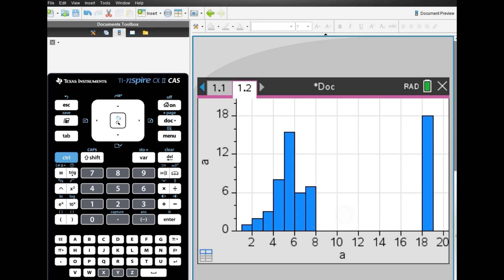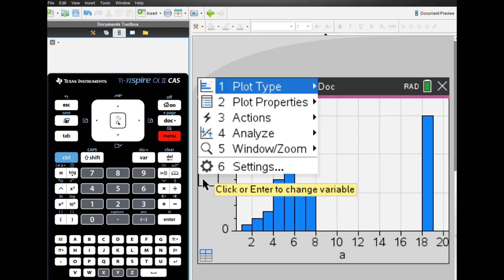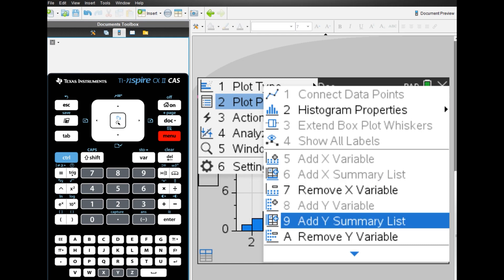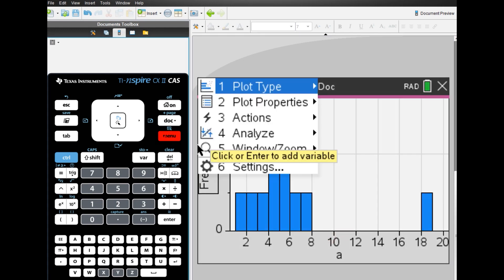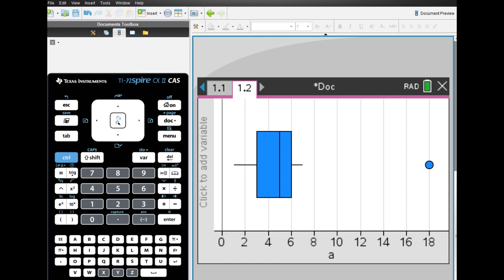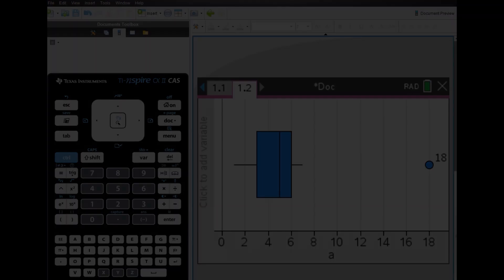Now a histogram will appear, but we need to change it to box plot. Press the menu button again and select 2 for plot properties, and then choose remove y variable. Finally, press the menu button again and select box plot under plot type. Now you can see the box plot. Moving the cursor from left to right, you can see the minimum, lower quartile, median, upper quartile, and maximum. The value acting on the far right is the outlier. Although the cursor may not be visible on the recorded screen, you can check each value by moving the cursor.